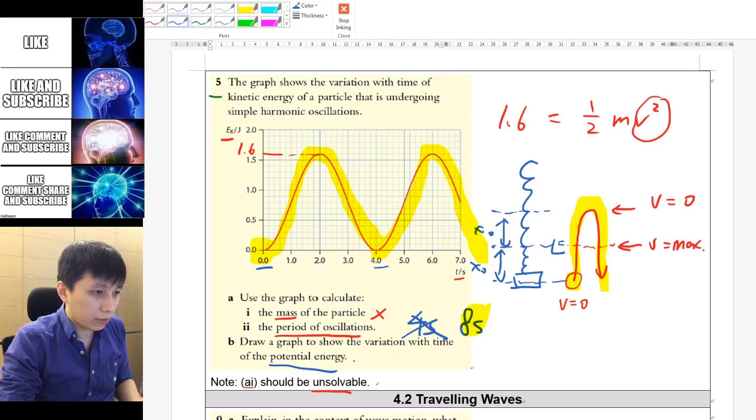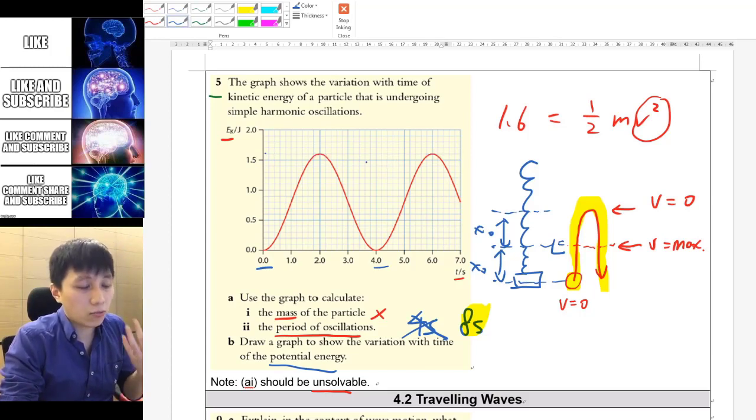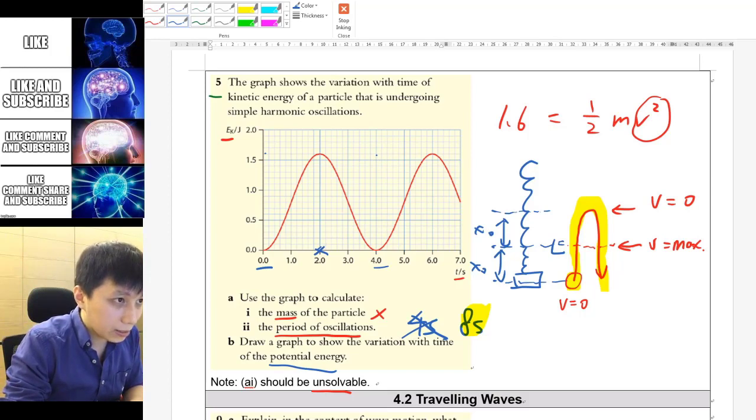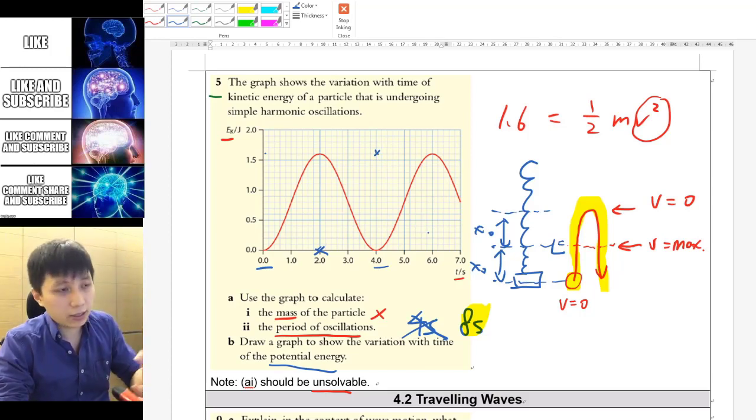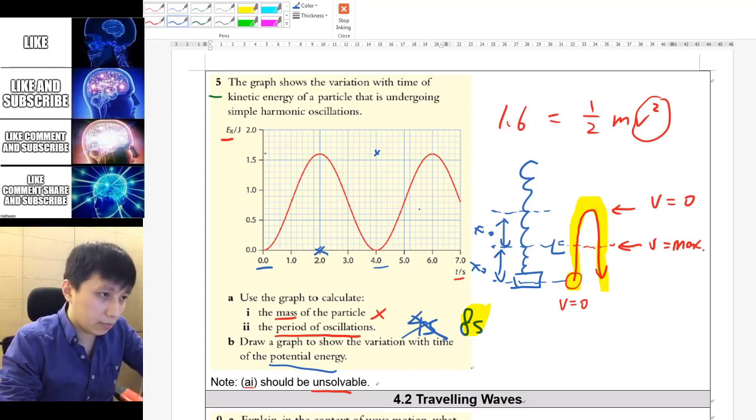So make sure you don't fall into this trap in the future. And part B I think is rather easy. It asks you to draw the variation of potential energy over time. Just to recall, the energy will remain constant for the total energy. Overall you should have a constant value for the total energy, but that's not what they ask you to draw. They ask you to draw potential energy. So when KE is at maximum, then PE will be at minimum or the other way around.